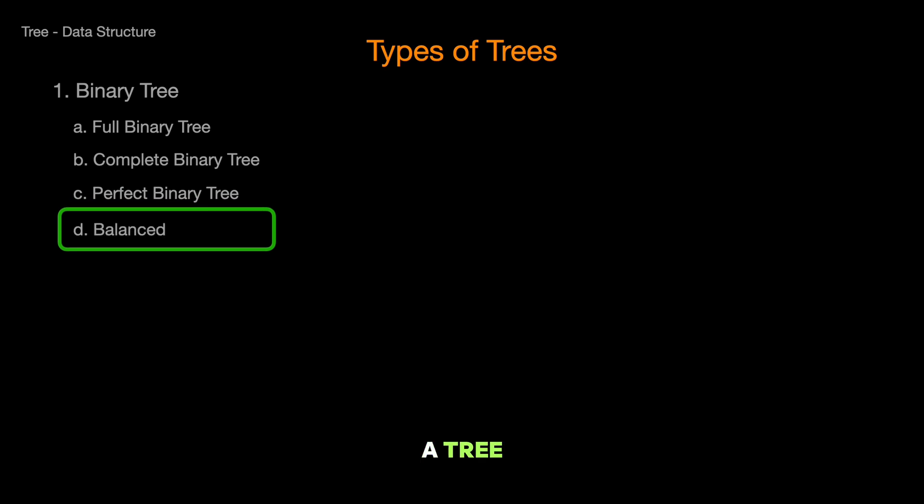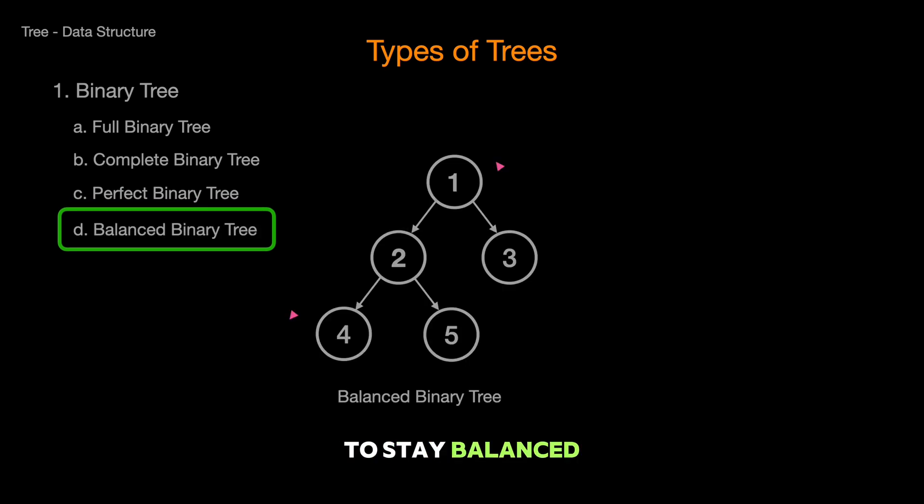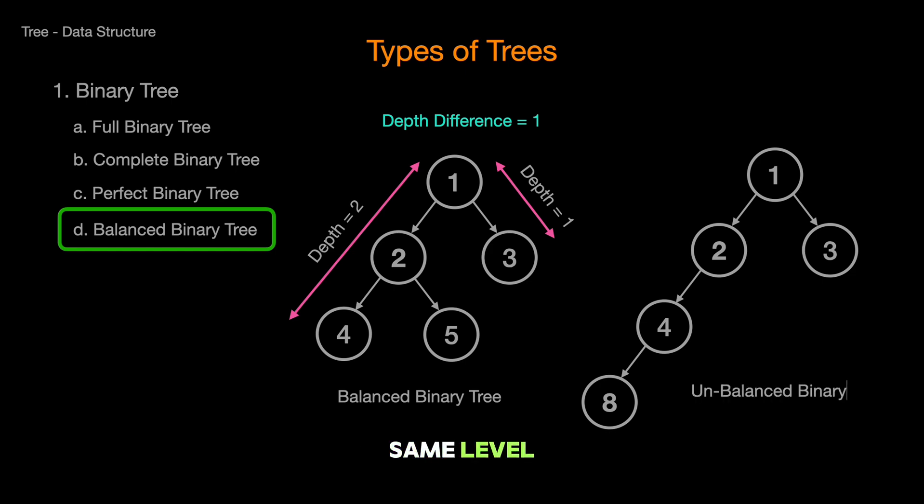But what about a tree that's just trying to stay balanced? That's where the balanced binary tree comes in. It's not perfect, but it tries to keep its leaves at roughly the same level to avoid any side getting too heavy. Think of it as a well-organized shelf, where the weight is distributed evenly enough to not tip over.